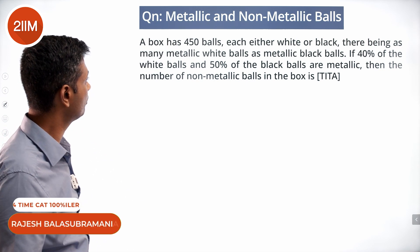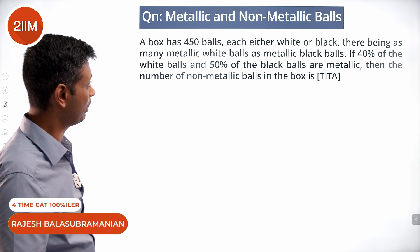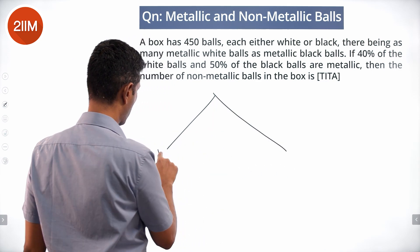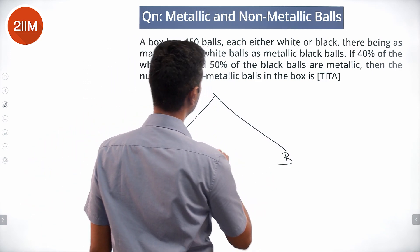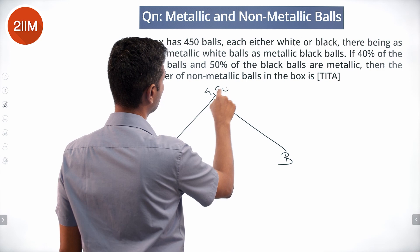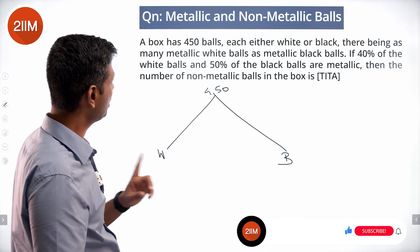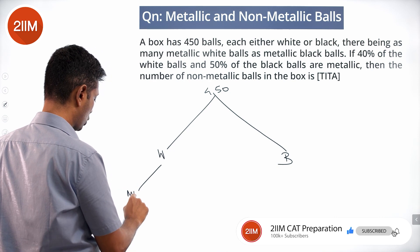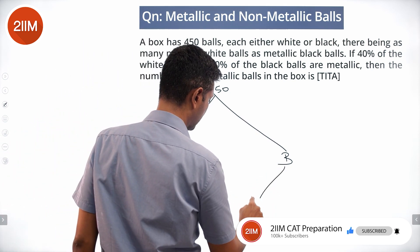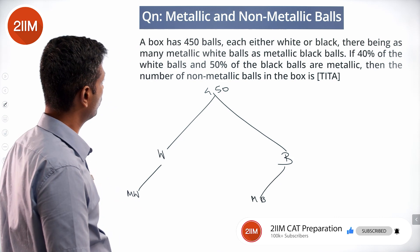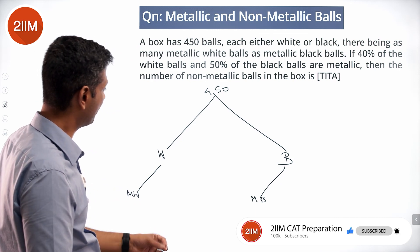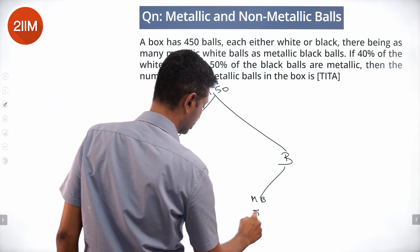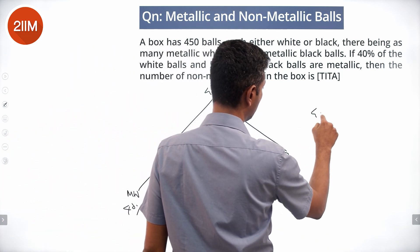A box has 450 balls, each either white or black. There are as many metallic white balls as metallic black balls. 40 percent of the white balls and 50 percent of the black balls are metallic.